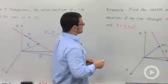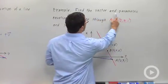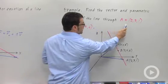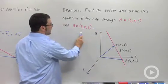Let's see an example. Find the vector and parametric equations of the line through point A(2, 3, 1) and B(5, 4, 6). I've drawn the line here.